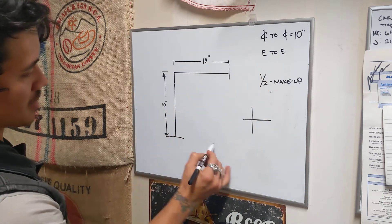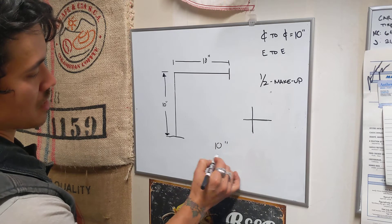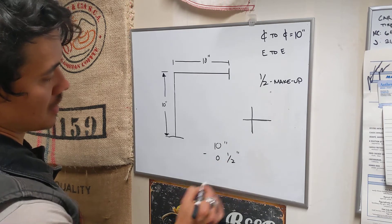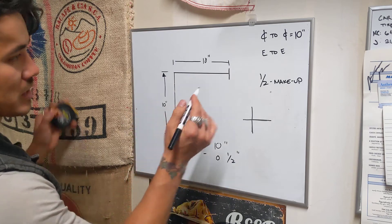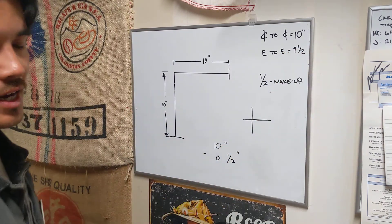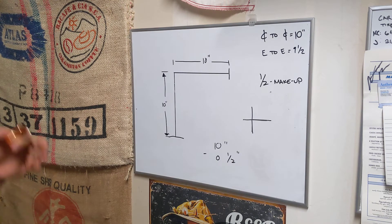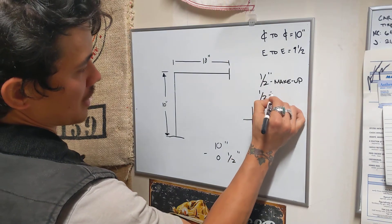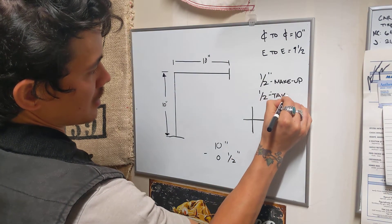The actual makeup is going to be we'll call it half an inch just to make it easy. So you have center to center, you're going to take 10 inches but you're going to subtract half an inch. So that's going to leave you with an end to end cut of nine and a half inches. That can be really confusing at the beginning. So we have a half an inch makeup and a half inch takeoff.